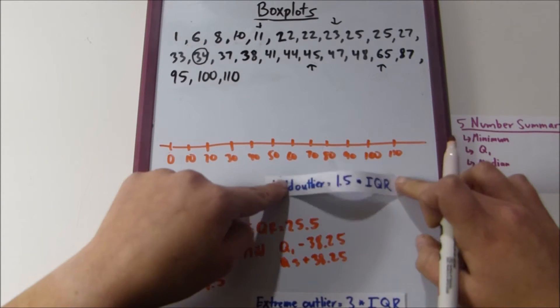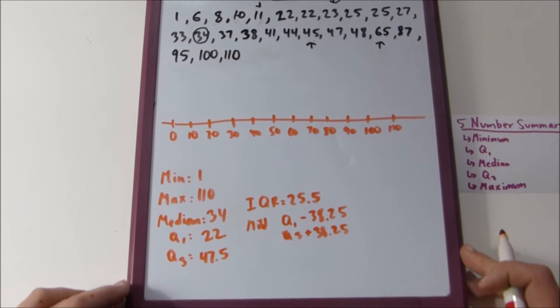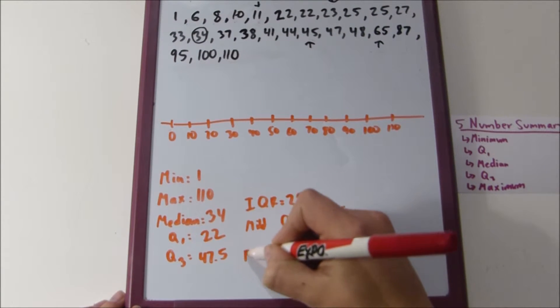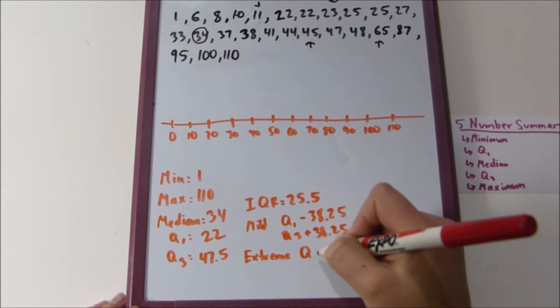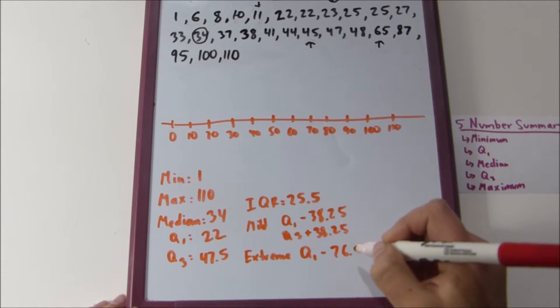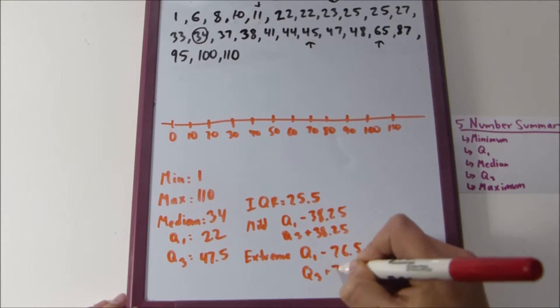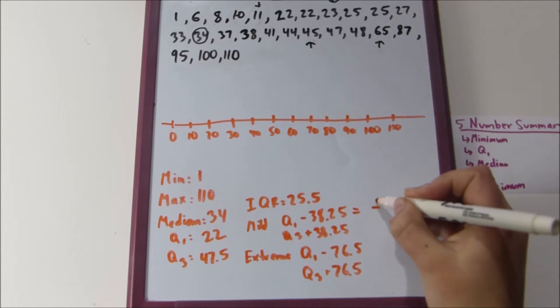For a mild outlier, it would have to be Q1 minus 38.25 or Q3 plus 38.25. And for an extreme outlier, it would be quartile one minus seventy-six point five, or quartile three plus seventy-six point five.